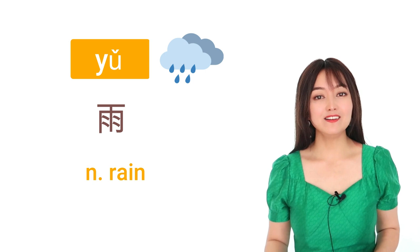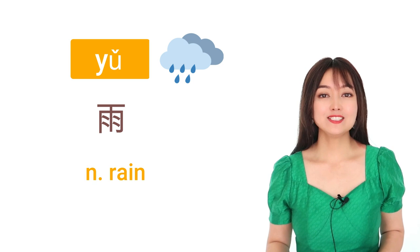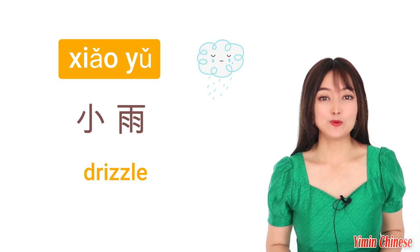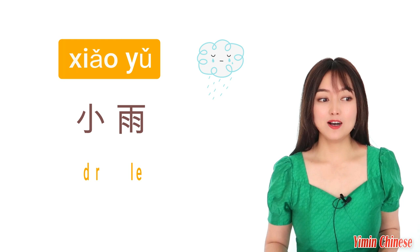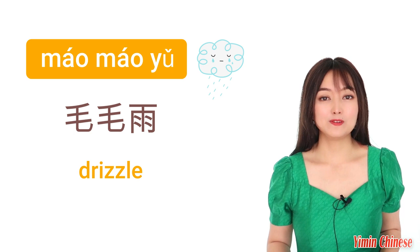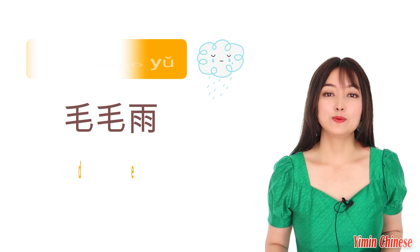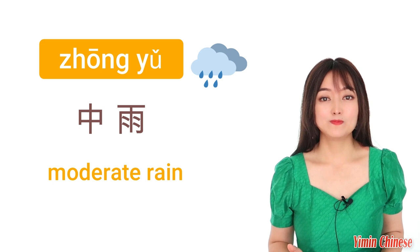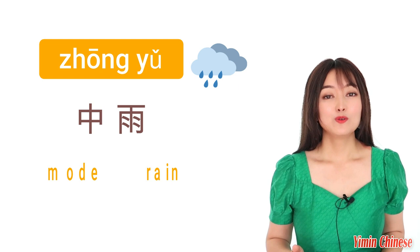好，下一个。Raining days. The noun of rain is 雨。Now according to the intensity, we have 小雨 (just very small rain). In spoken Chinese we also say 毛毛雨 — 毛 means hair, like cat hair, so 毛毛雨 means the rain is so small like hair. We have 中雨, moderate rain — 中等的雨，不大也不小。We also have 大雨.